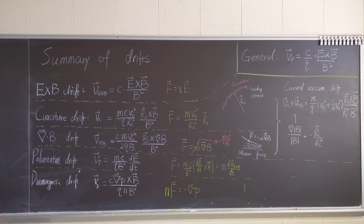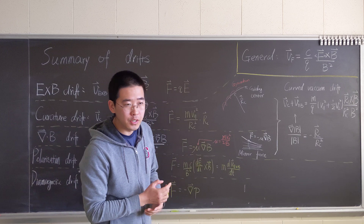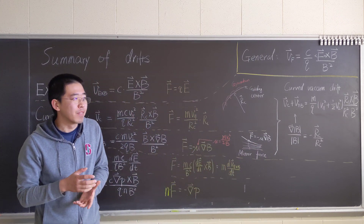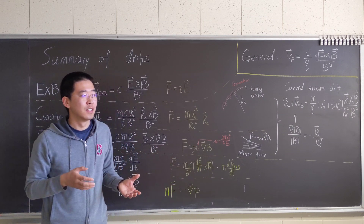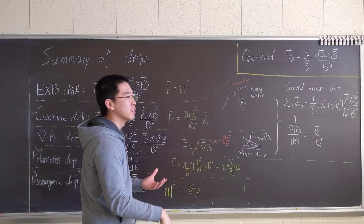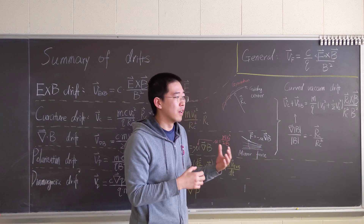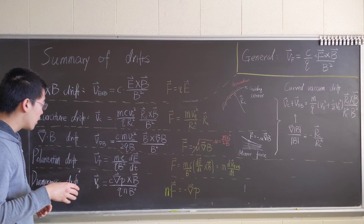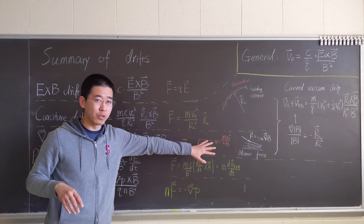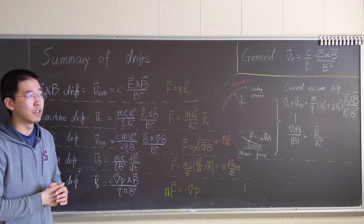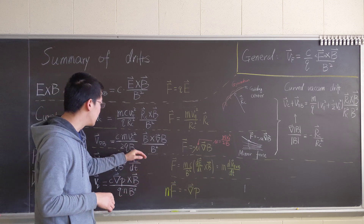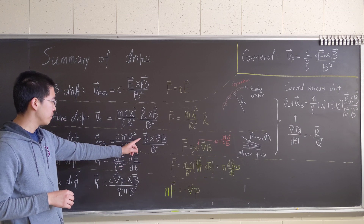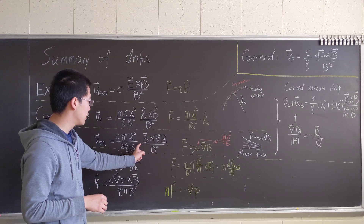And then we have the grad-B drift, which is due to the mirror force. If we have an inhomogeneous magnetic field and the particle moves along it, in a Lenz's law sense it will induce a magnetic field in the opposite direction, so it will resist the change — as you learned in your E&M courses. Applying the force to the general formula, v_{∇B} equals m over q times v_parallel squared over 2, times v cross grad-B over B squared.